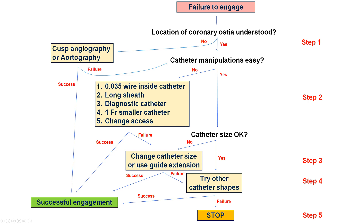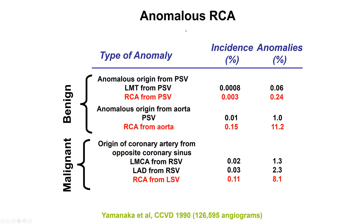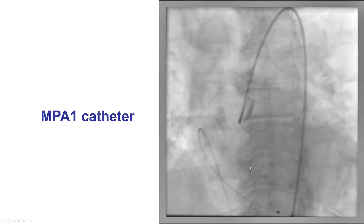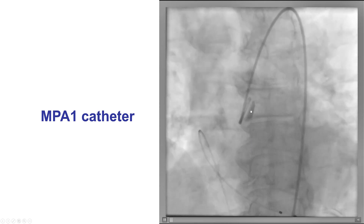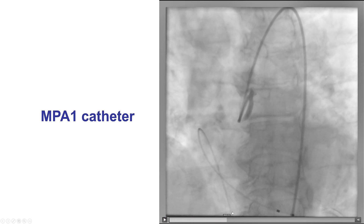Once we understand where the origin of the coronary artery is, we might use different techniques such as longer sheaths, diagnostic catheters, guide extensions, or various catheter shapes to engage the vessel. When it comes to the right coronary artery, there are variations in its origin. It can come from the posterior sinus of Valsalva, which is fairly infrequent. The most common anomalous origin is a high takeoff from the aorta with a superior and downward-pointing course, and less often it comes from the left sinus of Valsalva. In this case, we changed to a multipurpose catheter and were able to engage the right coronary artery, which appears to come higher from the aorta with a downward-pointing course — an anomalous origin right coronary artery.